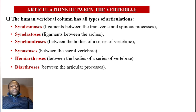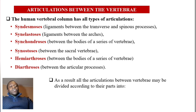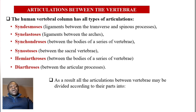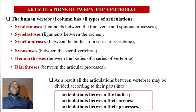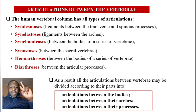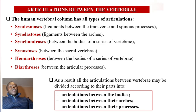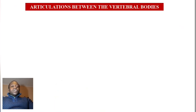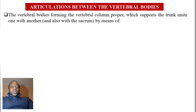Diarthrosis — these are true joints between the articular processes. As a result, the articulations between the vertebrae may be divided according to their parts into: articulations between the vertebral bodies, articulations between the vertebral arches, and articulations between the processes.